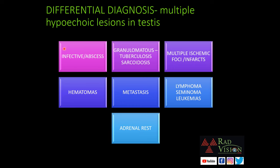As there is no history of fever and no raised vascularity within the hypoechoic lesions, infective etiology or abscesses are less likely. Granulomatous etiology is most probable. Ischemic infarcts and hematomas are less likely given no history of trauma or severe pain suggesting torsion. There are no upper abdominal lesions in the liver, spleen, or retroperitoneum to suggest metastasis, and no hepatosplenomegaly or retroperitoneal lymphadenopathy to suggest lymphoma or seminoma. Blood counts were normal, ruling out leukemia.